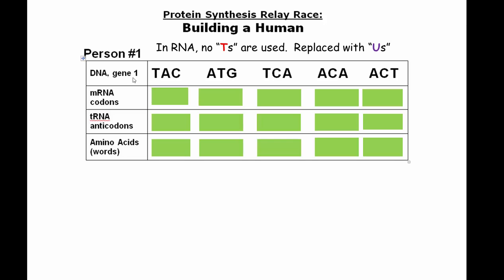DNA gene one actually has TAC. What would we get as an example? Well, the T would normally become an A, which we do have. The A would normally become a T, which we don't have — that's a U. And this is a G, so we get an AUG.